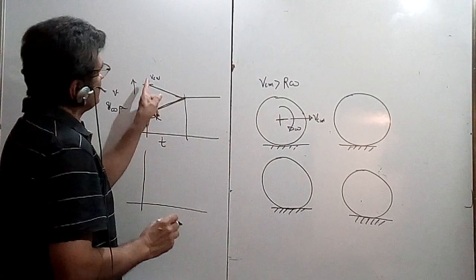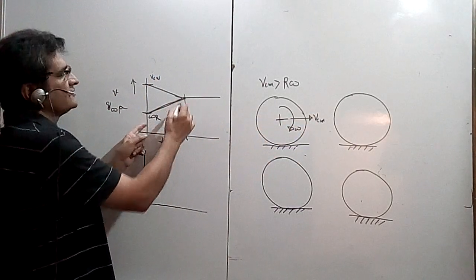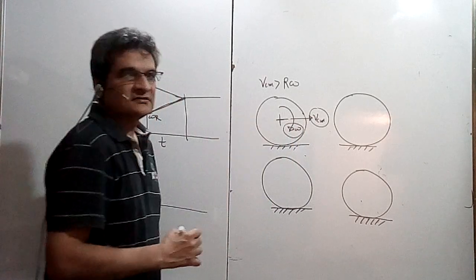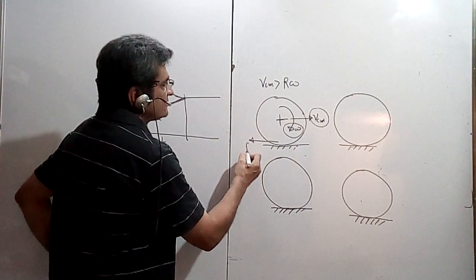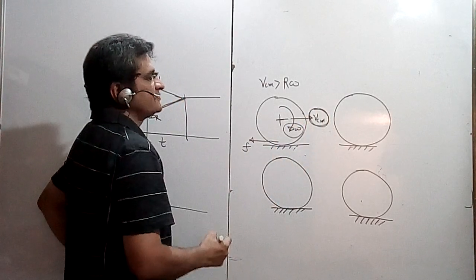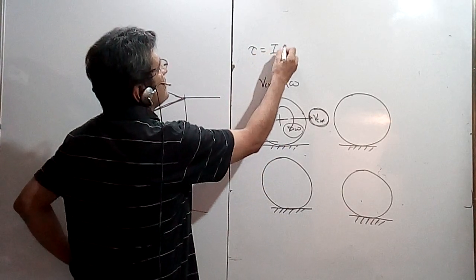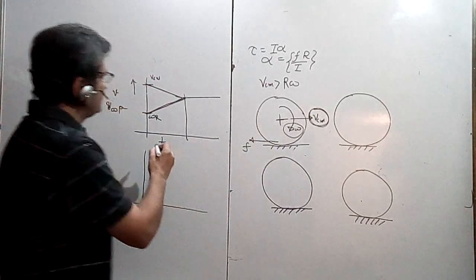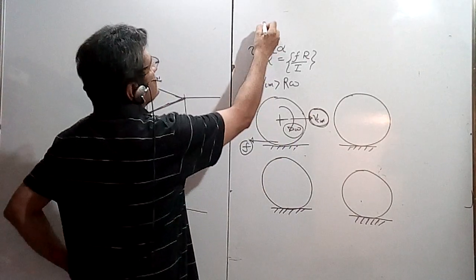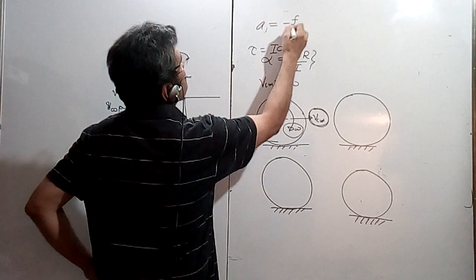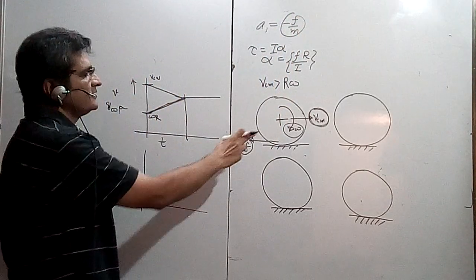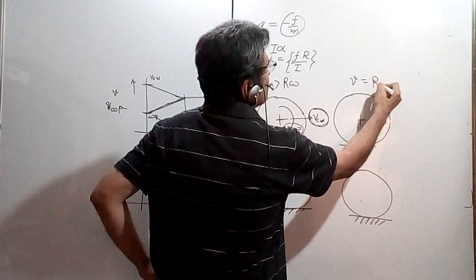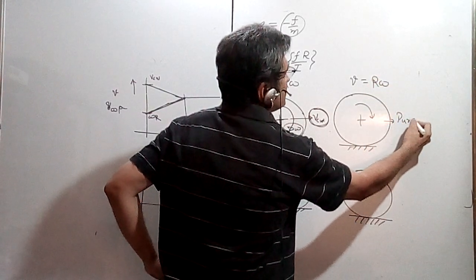The velocity of center of mass is reducing and omega R is increasing. There is a friction force acting against the linear motion but along the rotational motion. It provides retarding acceleration to V_cm and a torque equal to I·alpha, so alpha equals F·R divided by I. This increases omega R, while the same force provides retardation of minus F upon M for linear motion. You reach a situation where V equals R·omega — this is pure rolling.